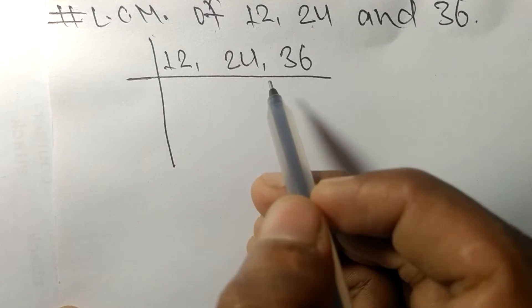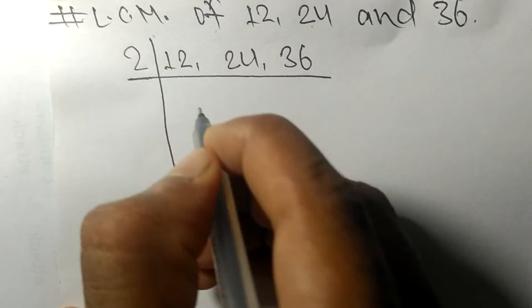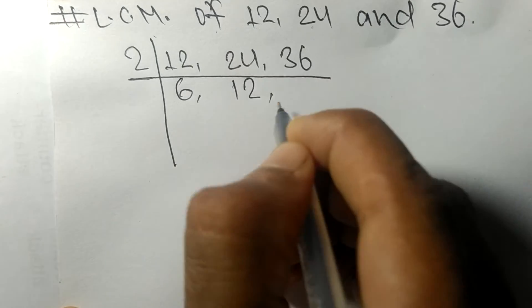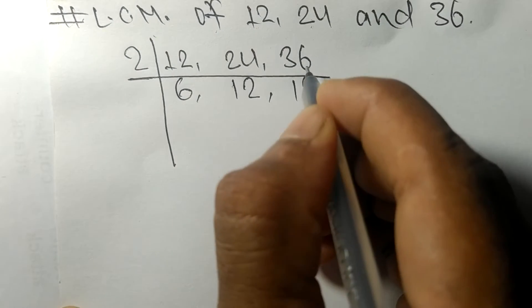So these all numbers are divisible by 2. 2 times 6 means 12, 2 times 12 means 24, 2 times 18 means 36.